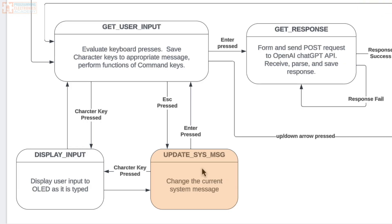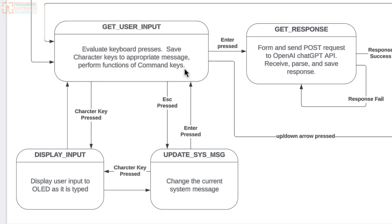The system message is a message that can be used to steer the response from the ChatGPT API. When you enter the 'update system message' state, character keys that are pressed start being recorded to the system message instead of the user message. Once the user submits a new system message by pressing enter, the enter key brings them back to 'get user input.' Note that different key presses have different effects depending on what state you're in.